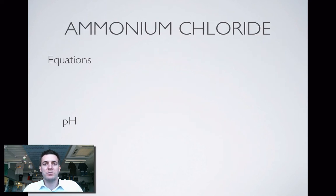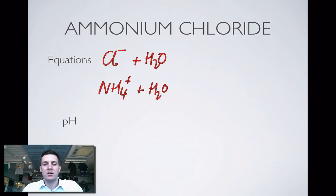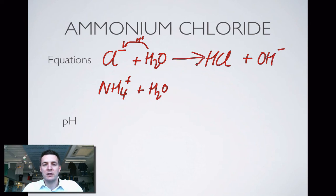Now let's look at a salt that does produce acidic or basic ions: ammonium chloride. We'll write out the ions in this substance and try to write equations for those ions reacting with water. As we've just established, chloride ions could potentially take H plus from water to form HCl and OH minus, but that reaction doesn't happen because the chloride ion is neutral — it forms a strong acid that just turns straight back into the starting materials.